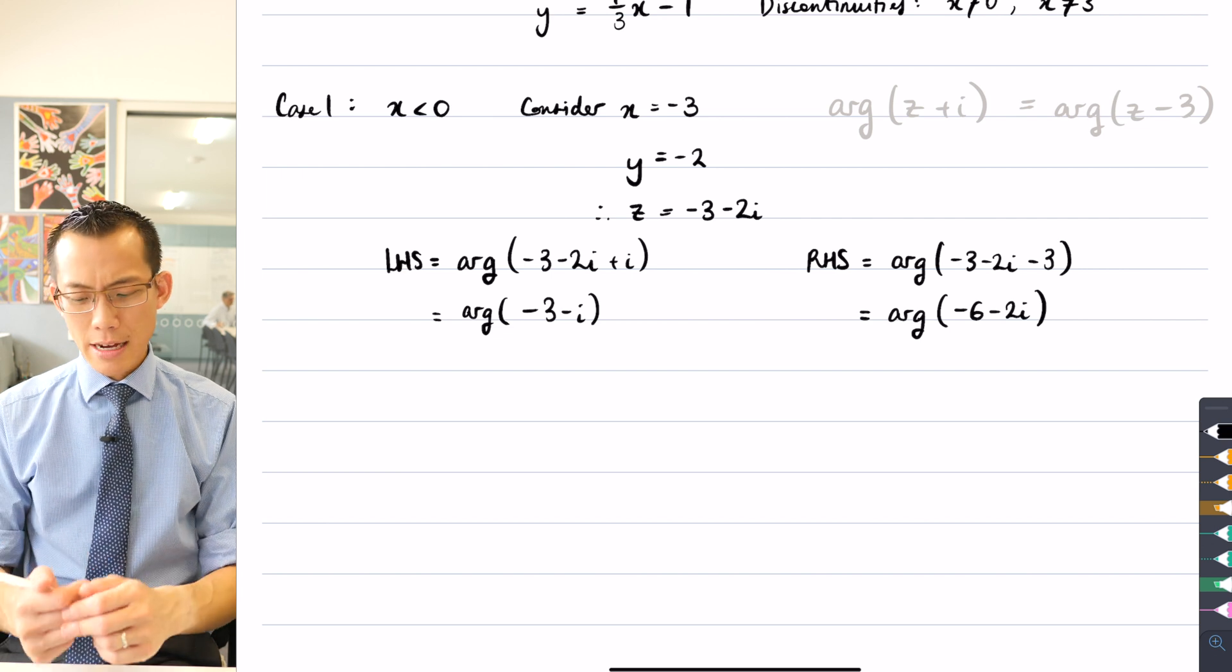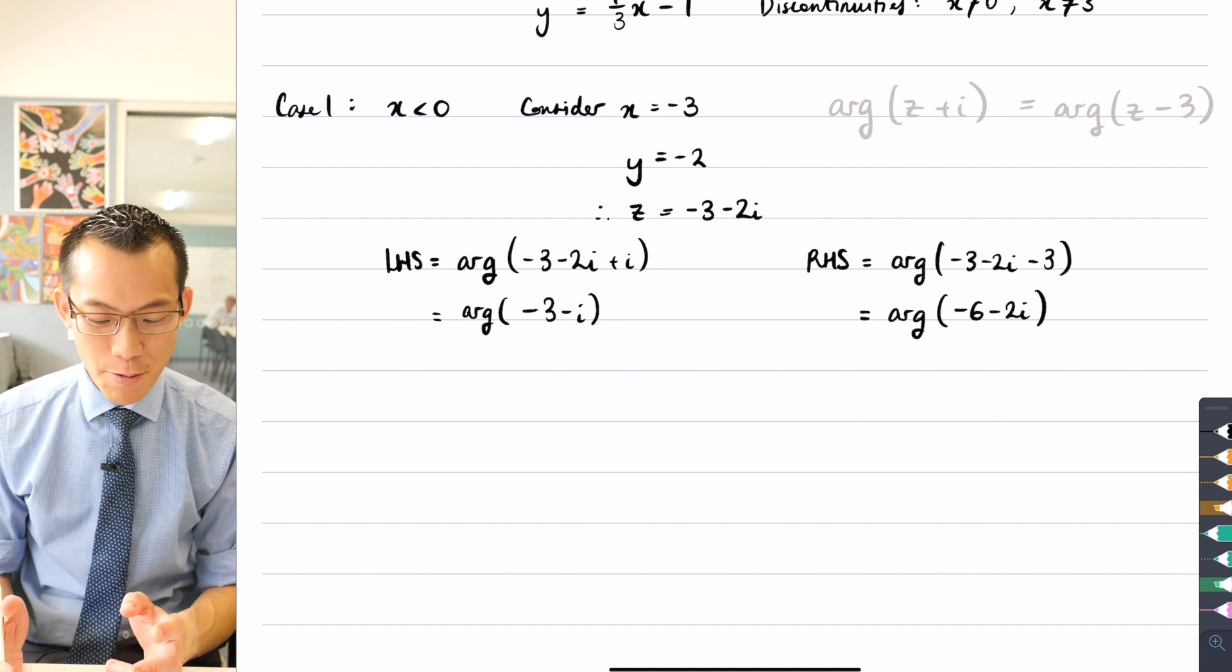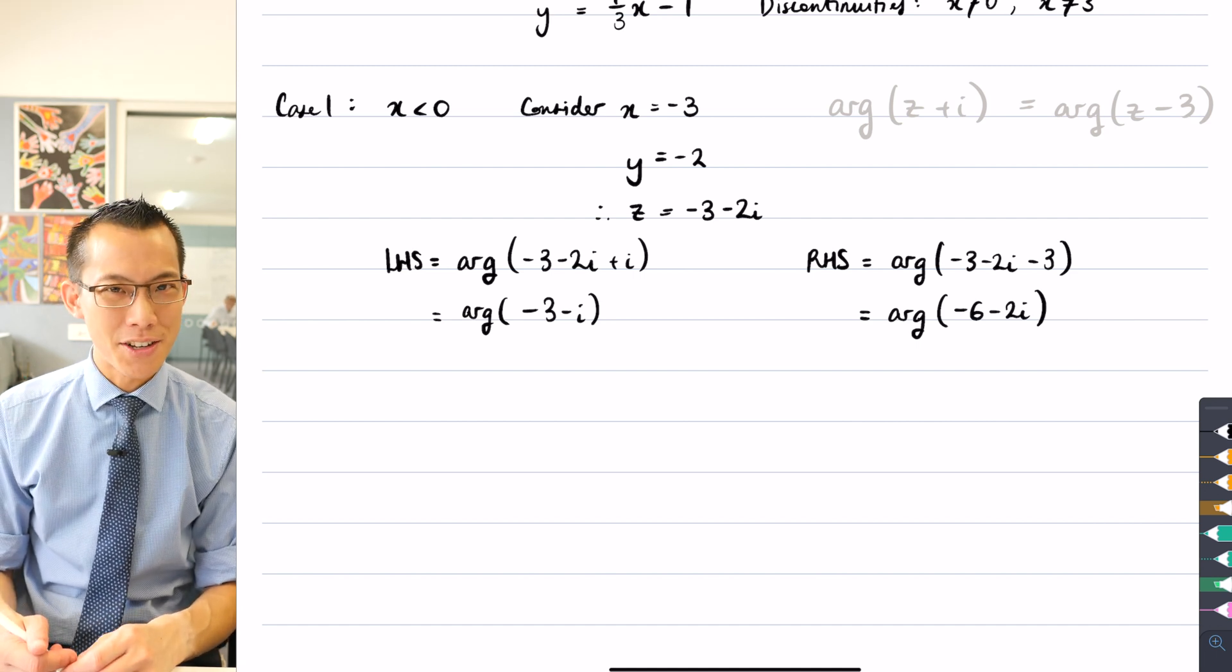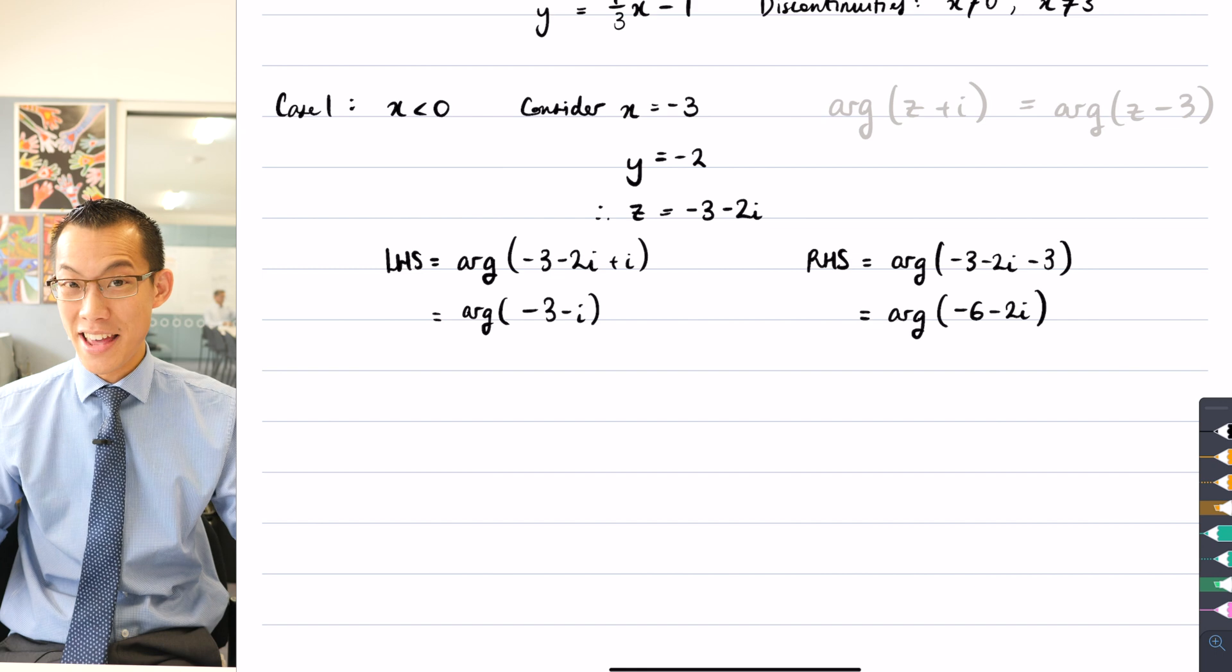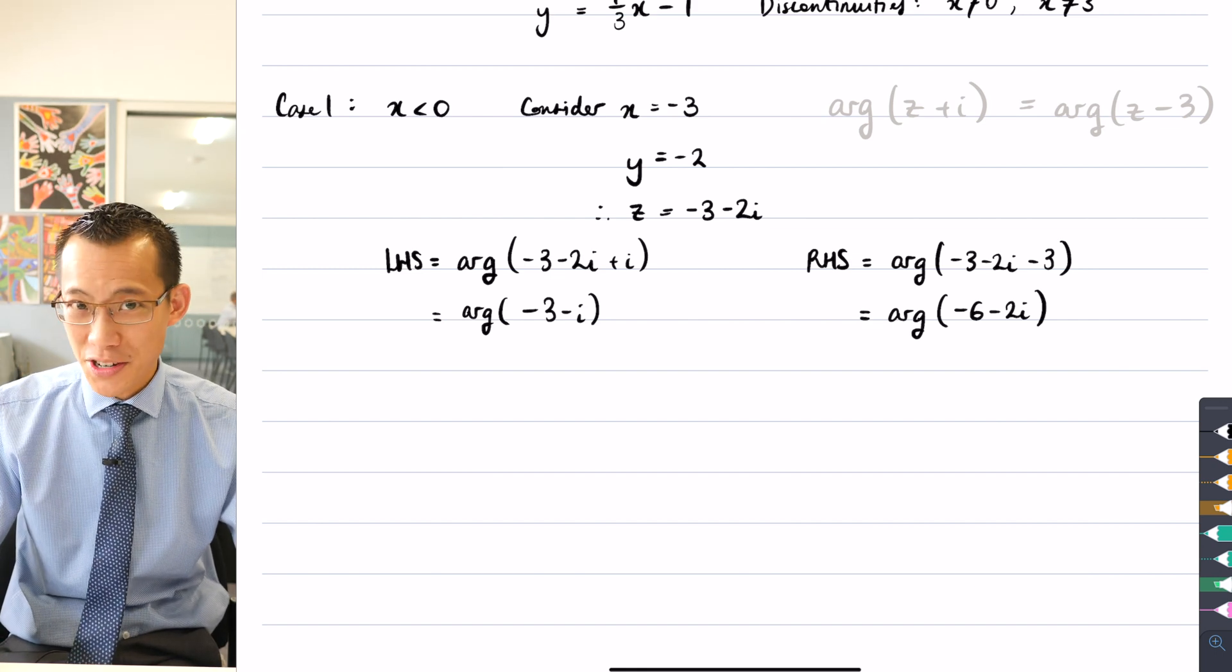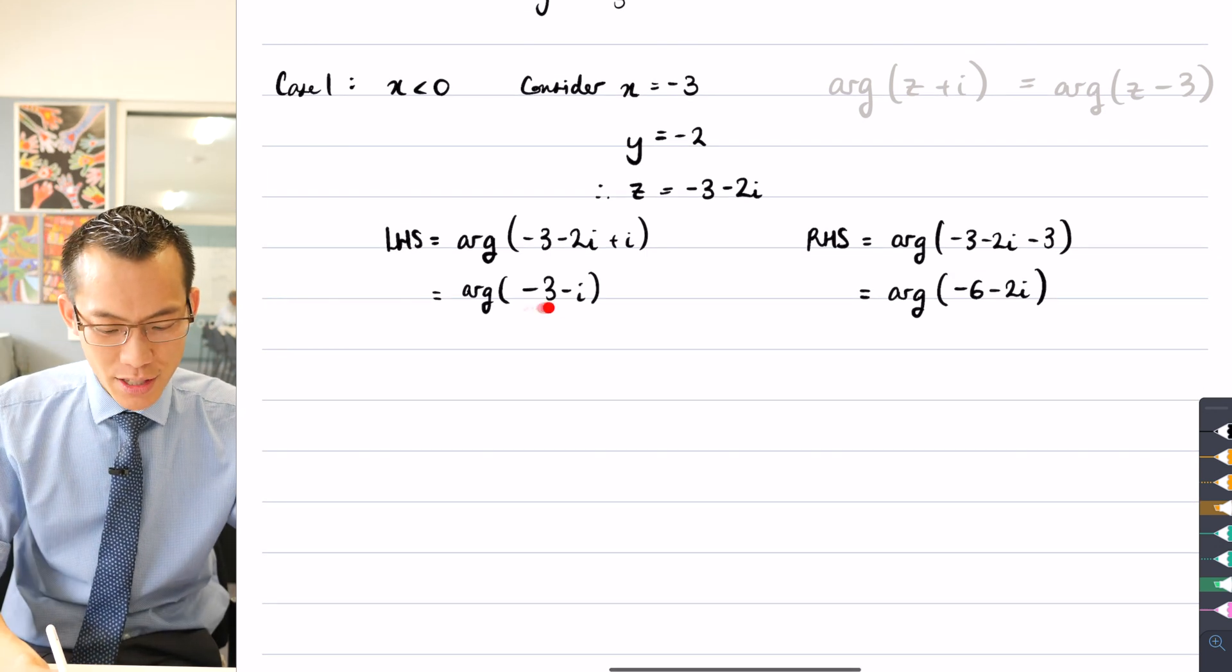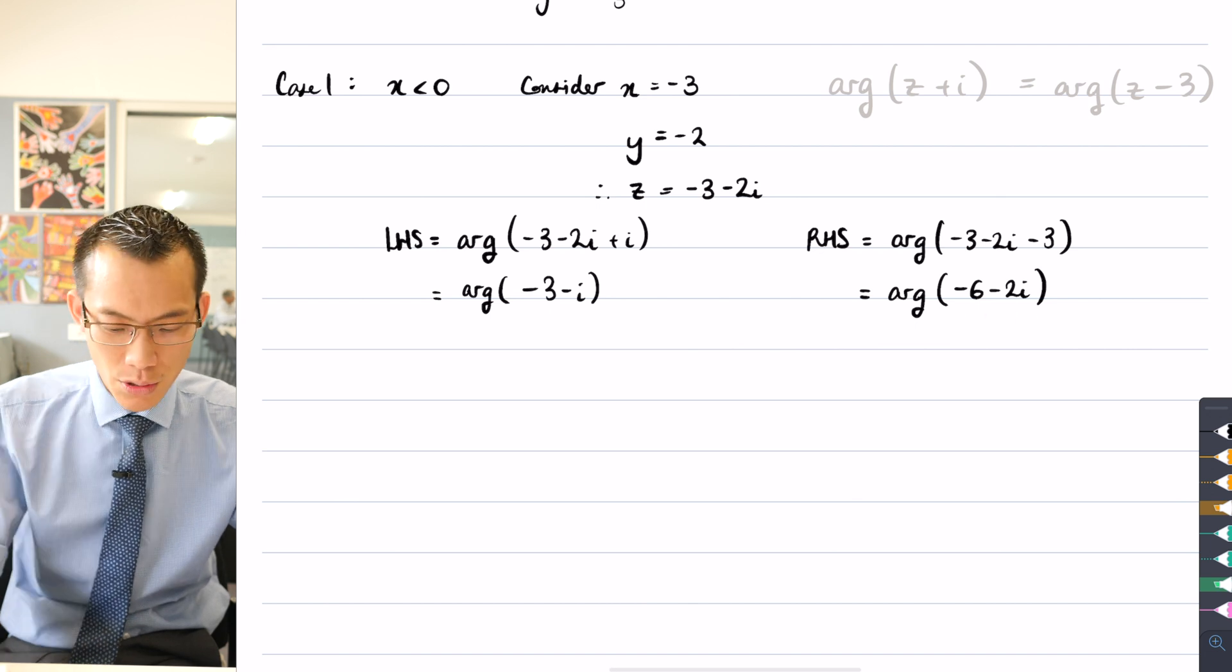Hmm. Now what does this mean? Well, we need to think about this geometrically a little bit. We did go about this algebraic approach to try and avoid as much geometry as we could, but you can never get away from it because complex numbers are inherently two-dimensional objects that exist on the complex plane. Where are these two complex numbers? Minus three minus i and minus six minus two i.